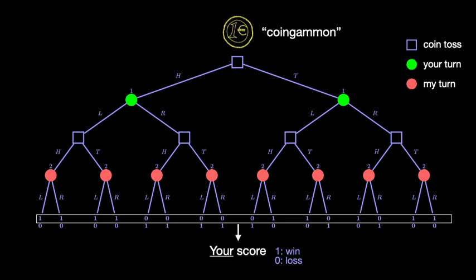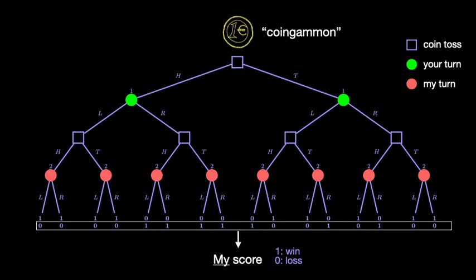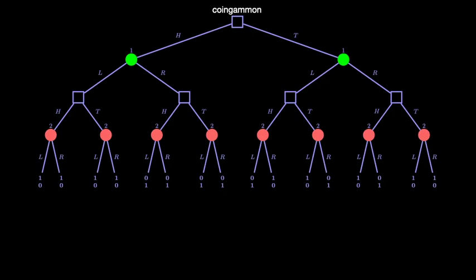The number in the first row gives your score, and the number in the second row gives my score. CoinGammon involves chance, but if you, as player 1, play the game perfectly, you can win at least 75% of the time against me, player 2. It all depends on your strategy.